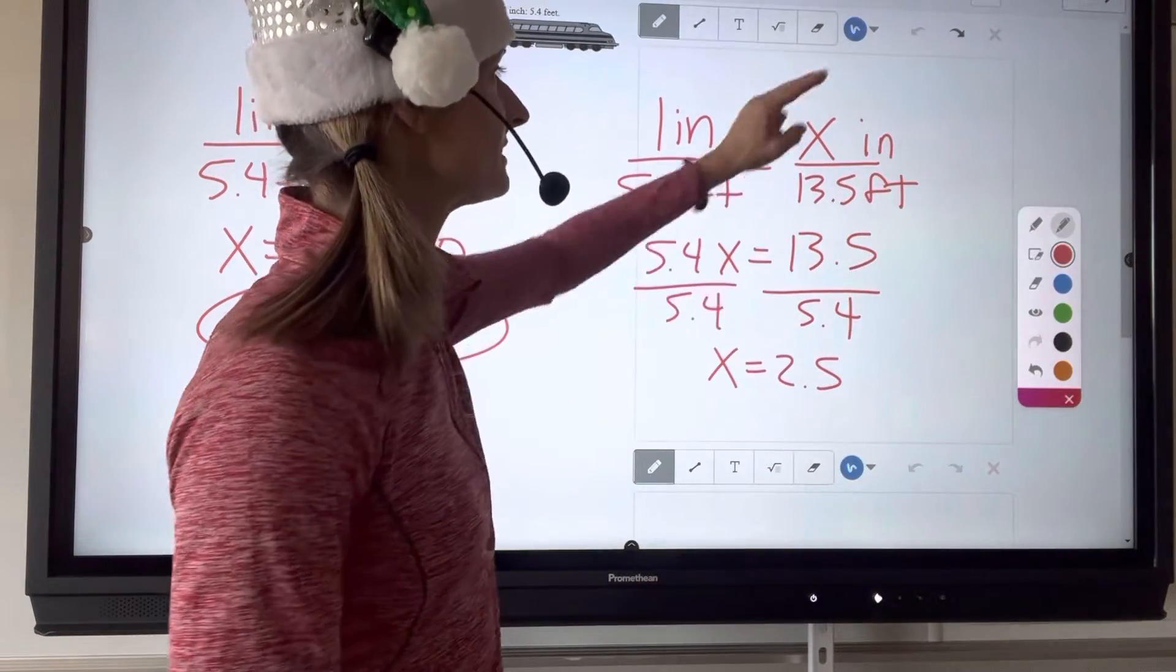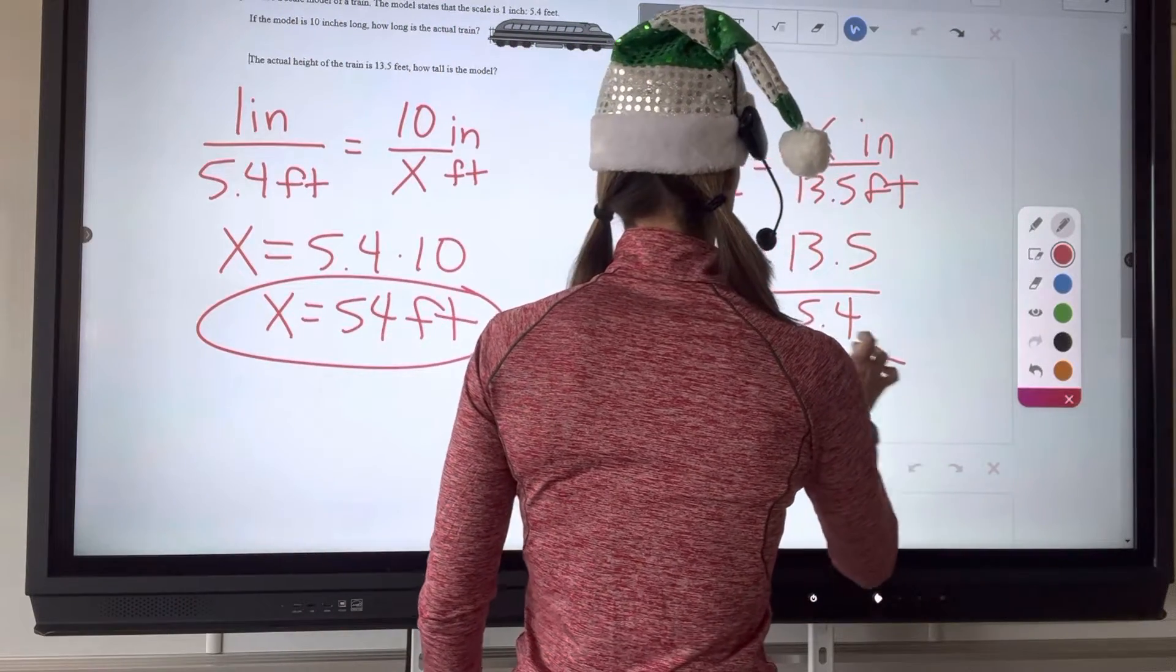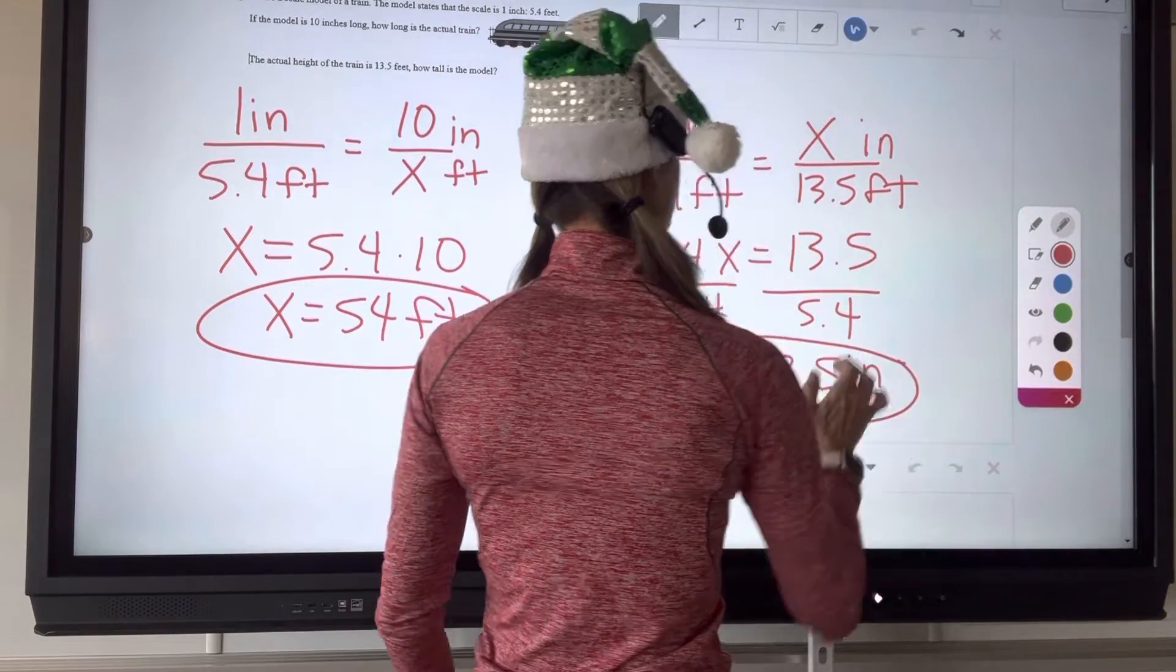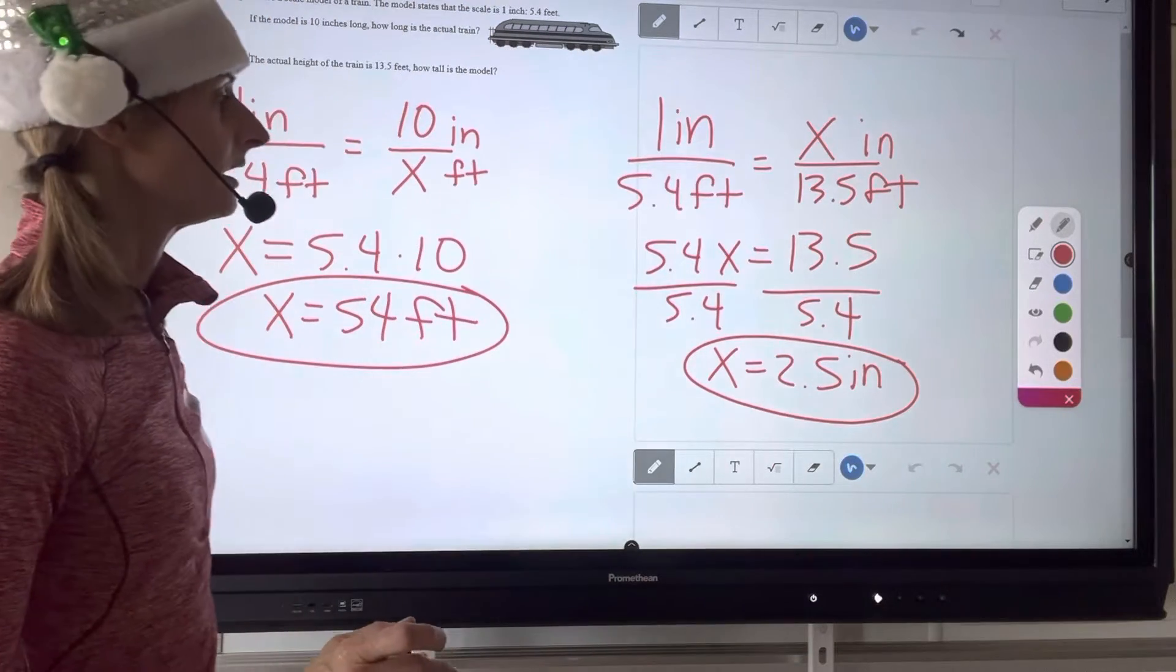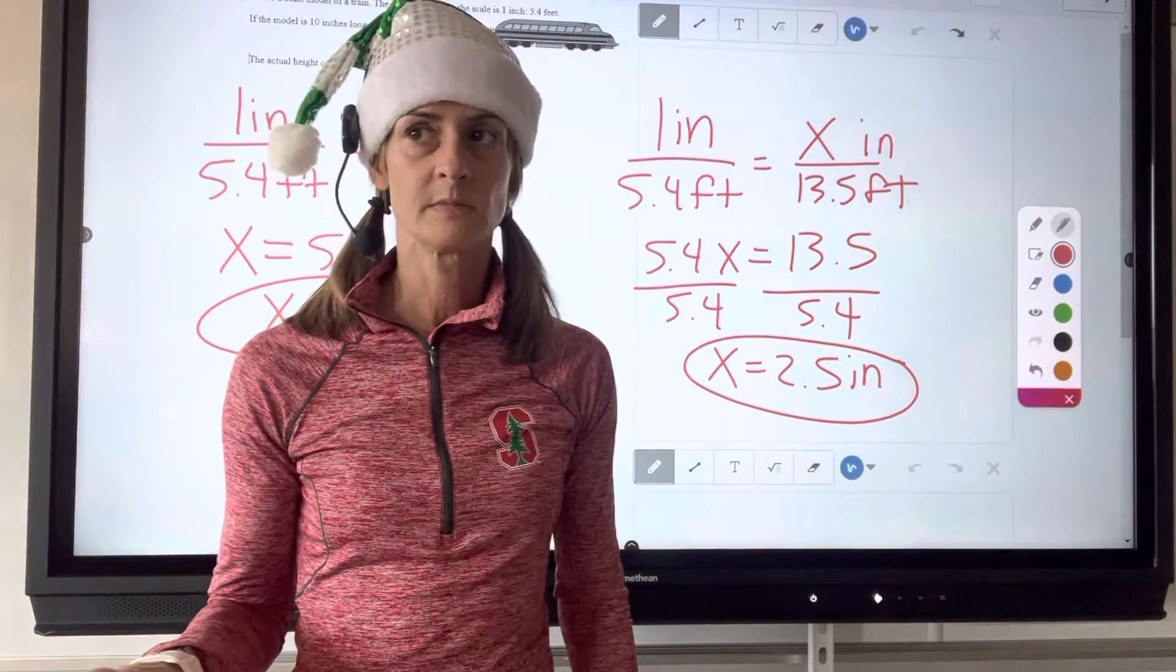2.5 what? What's the unit? Inches. Inches. 2.5 is 2 and 1 half simplified. Good. That's it.